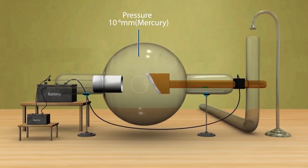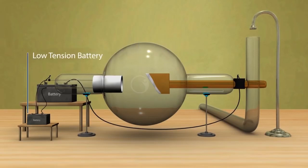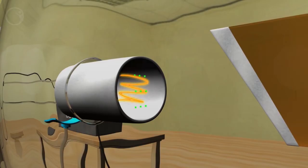The pressure inside the bulb is maintained at 10 to the power of minus 6 millimeters mercury. When the cathode is heated by passing a current through it from a low-tension battery, it emits cathode rays. These rays are nothing but electrons.